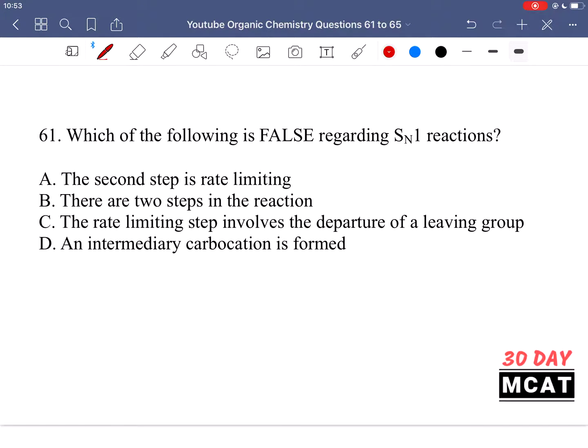In question 61 we're asked which of the following is false regarding SN1 reactions. So what do we have in SN1 reactions? We can have a carbon with a leaving group, and then we have a nucleophile coming in.